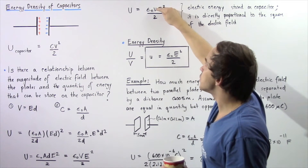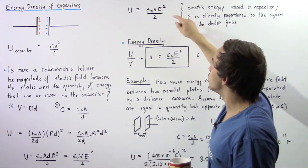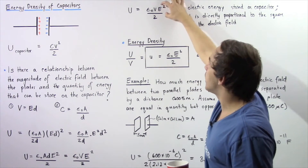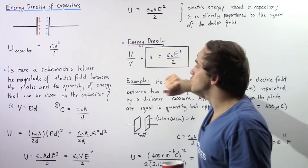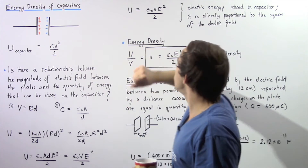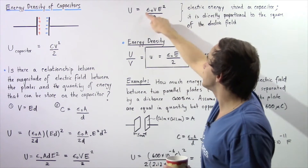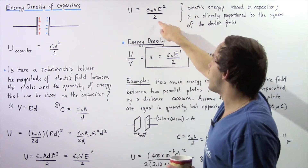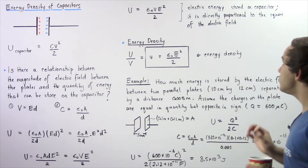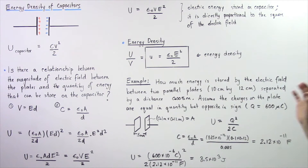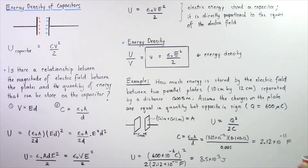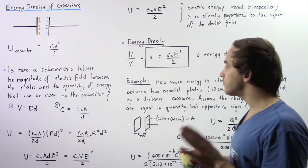This volume — not voltage — multiplied by the electric field between our two plates squared, divided by 2. So we see that the electric energy stored on the capacitor is directly proportional to the square of the electric field.